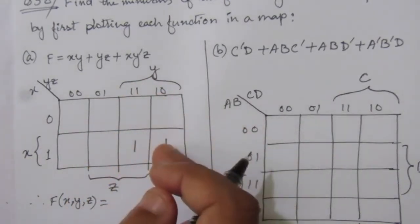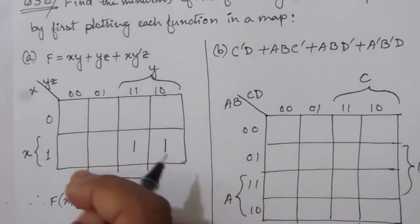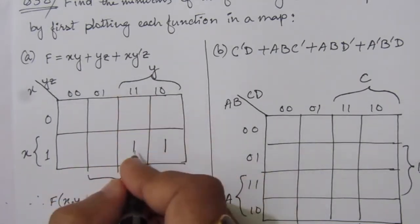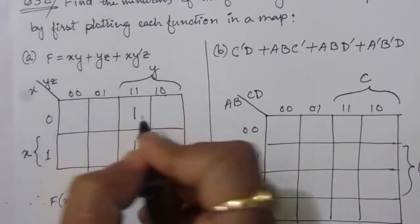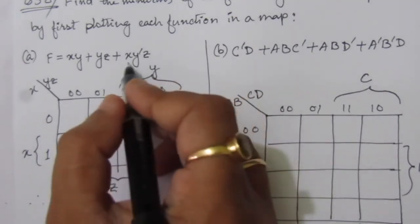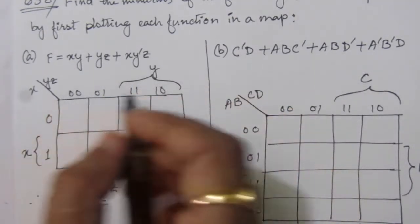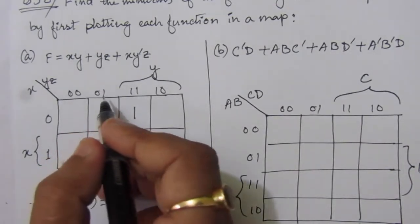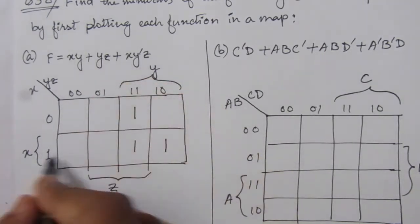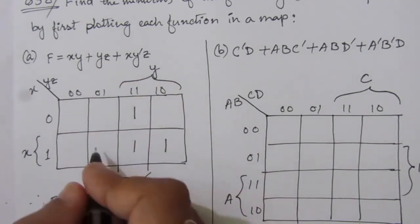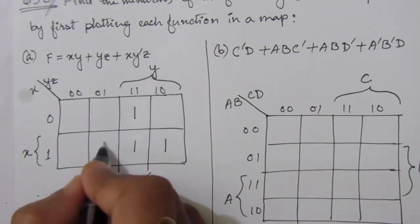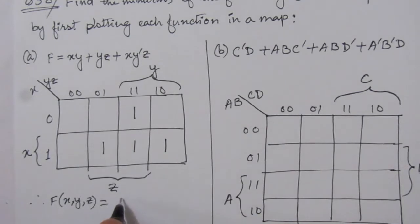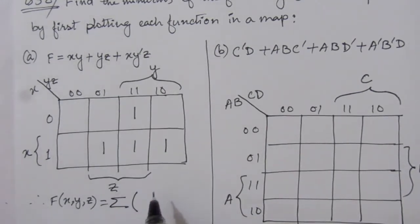We put one and one here. Now for yz: y is these two columns and z is these two columns, so the common column is this one — we already have a one here, so we put another one here. Now for the third term xy bar z: y bar z is this column because y is zero and z is one here. x is this row, so the common square is this one only, and we put a one here.